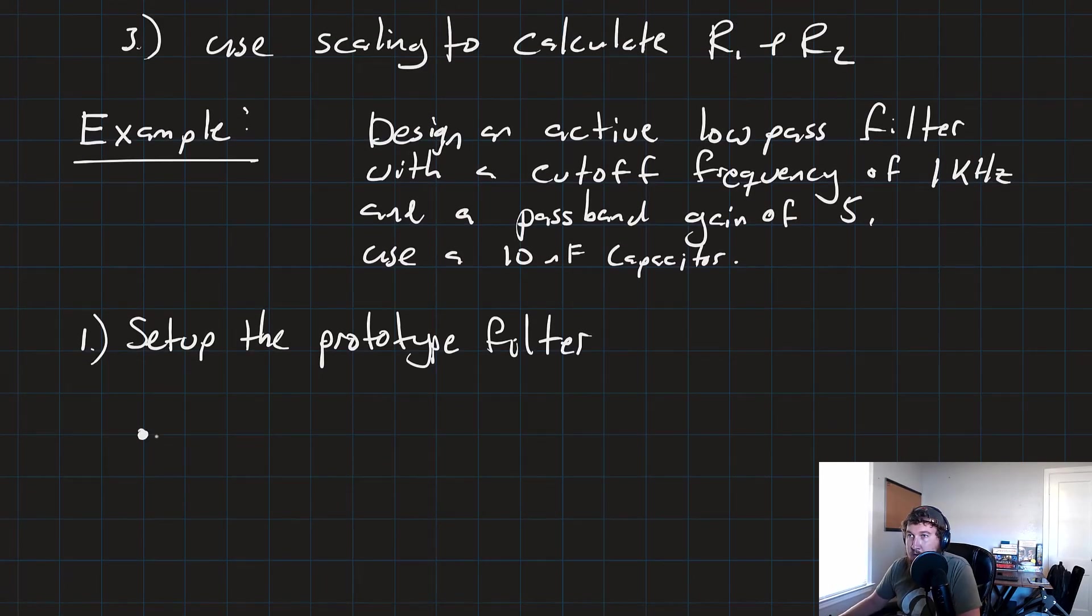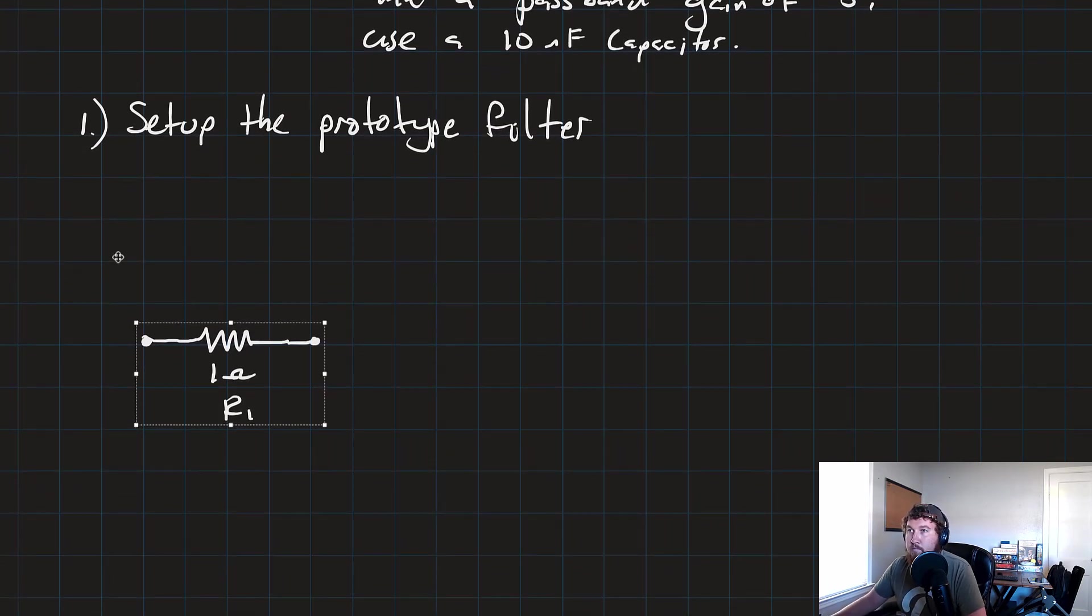So that's just going to be R1 ohm resistor for R1. And I didn't give myself much room. Let me do this real quick. There we go. And that's going to feed to our op amp, minus plus. Positive input goes to ground.